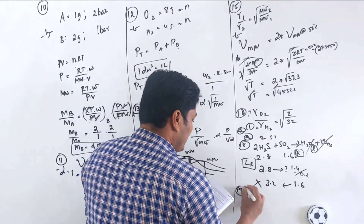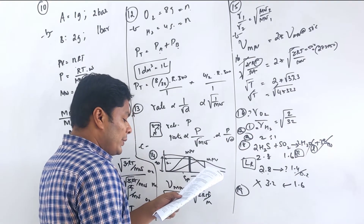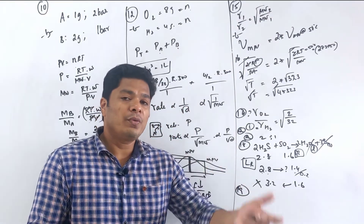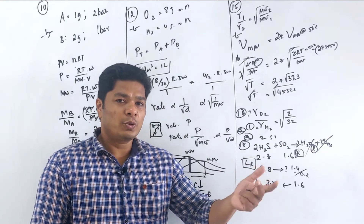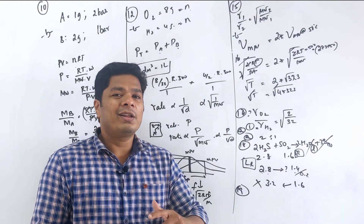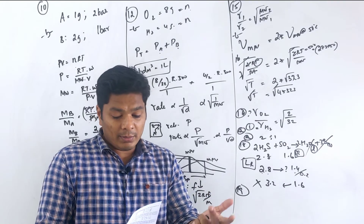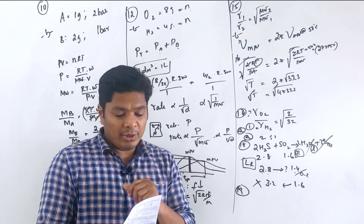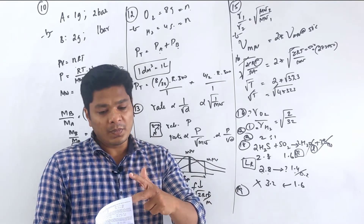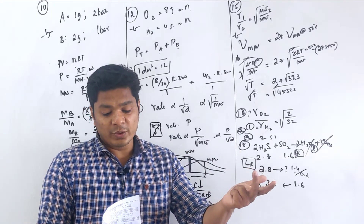Question 19: Order of RMS velocity of H2, N2, O2, HBr. RMS velocity is proportional to 1/√(molecular weight). Molecular weights: H2=2, N2=28, O2=32, HBr>80. Heavier molecules are slower, so order of speed is H2 > N2 > O2 > HBr. Option A.